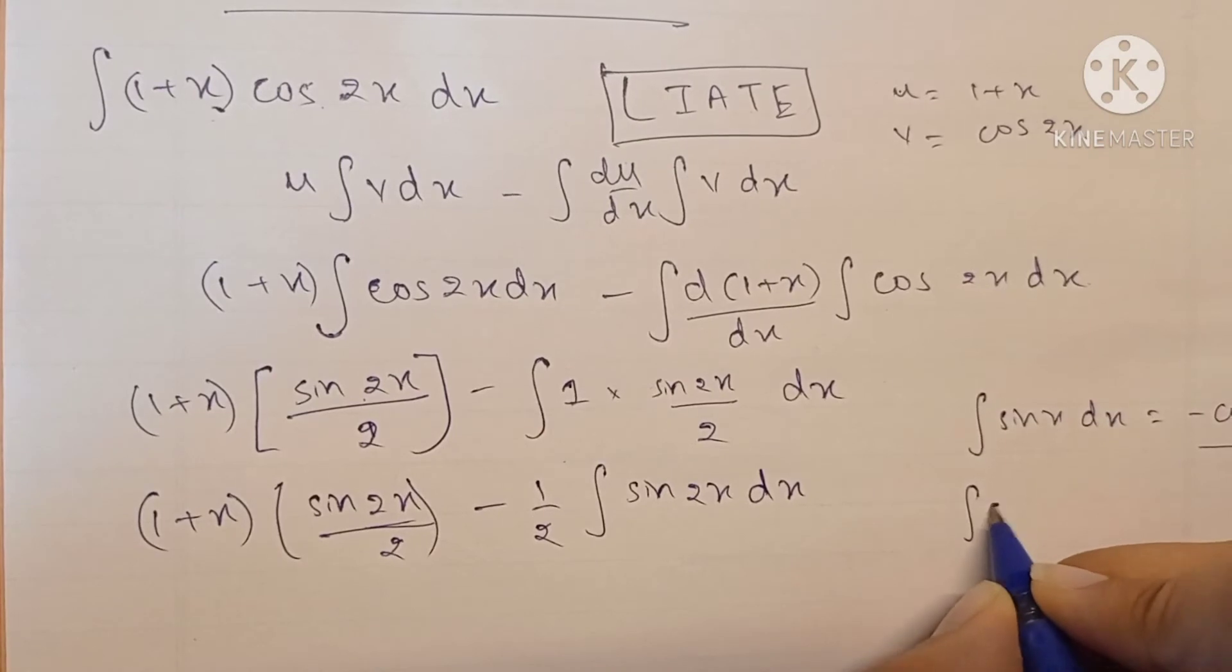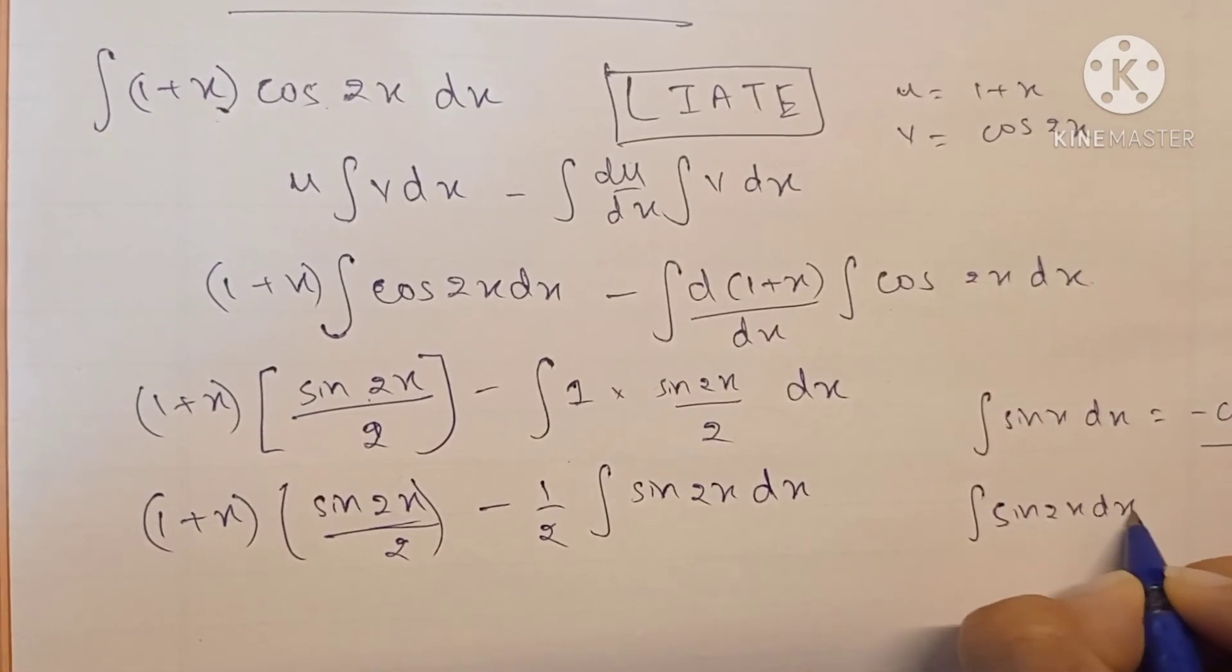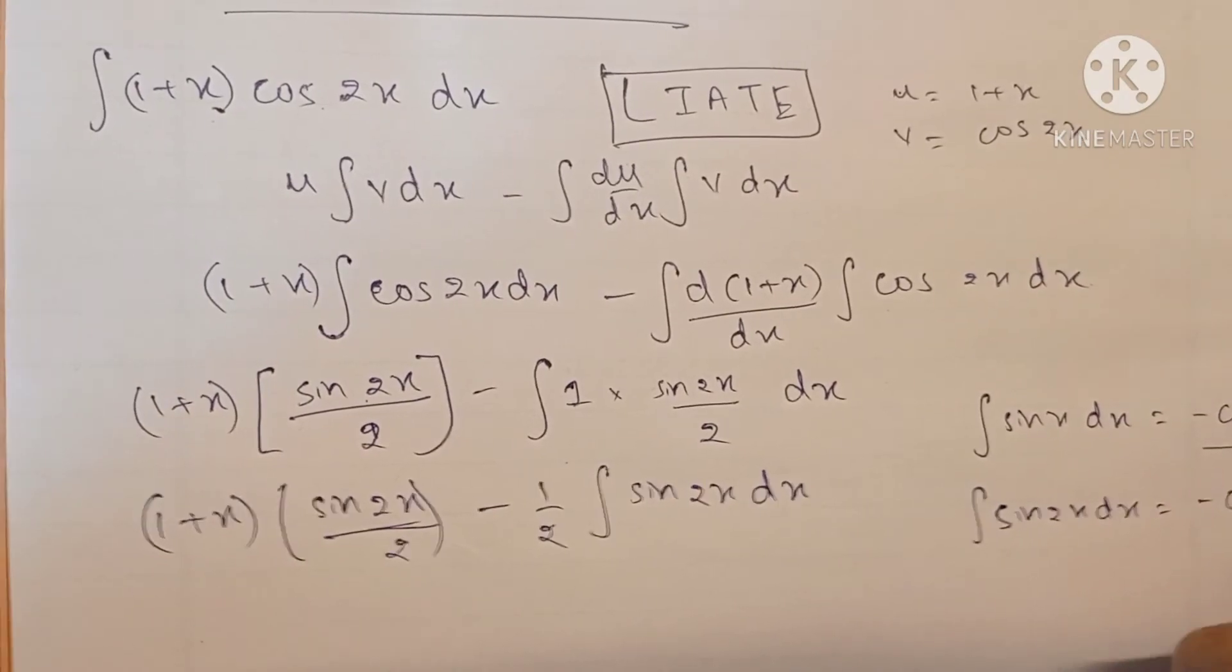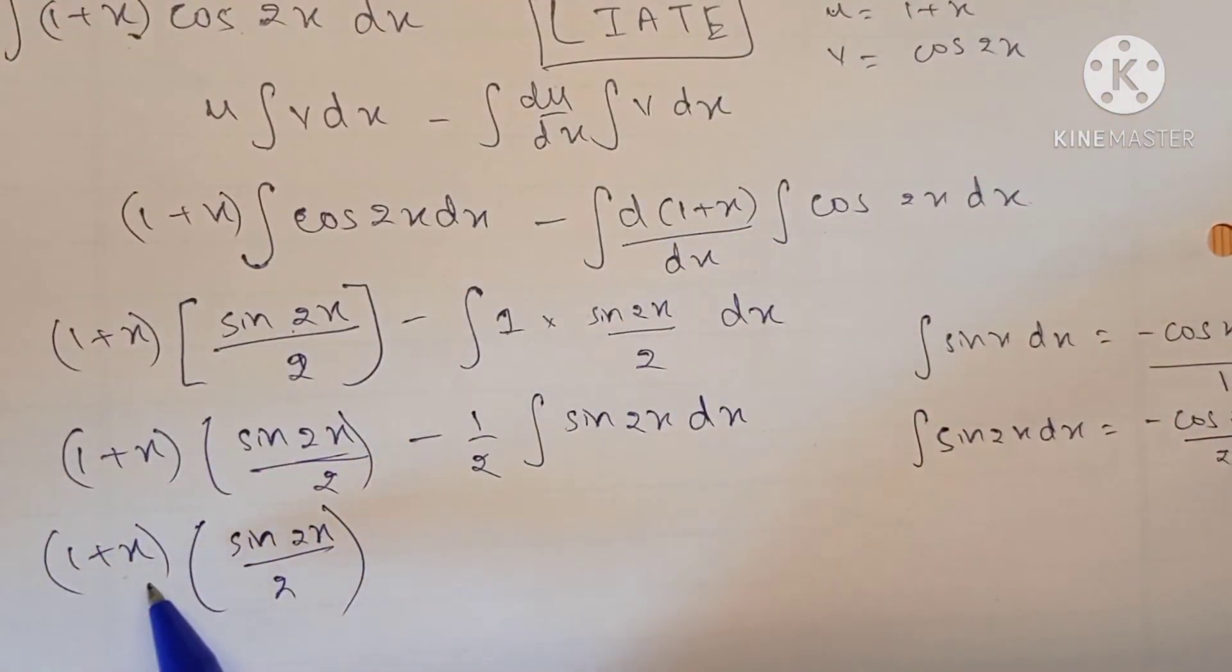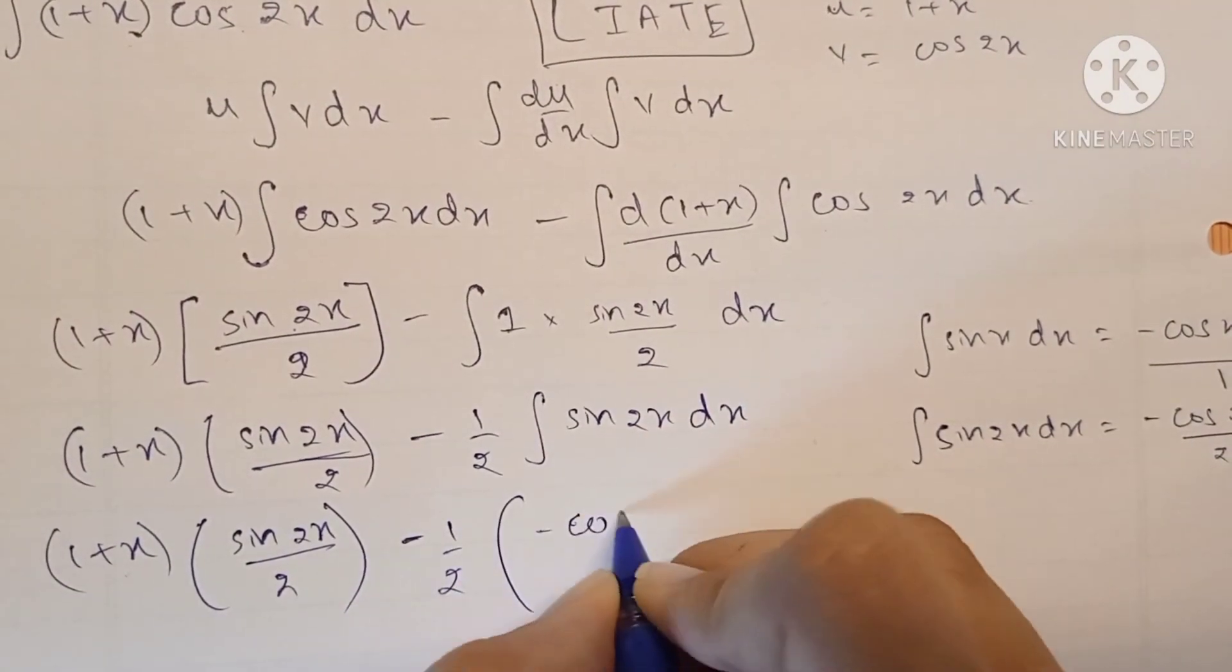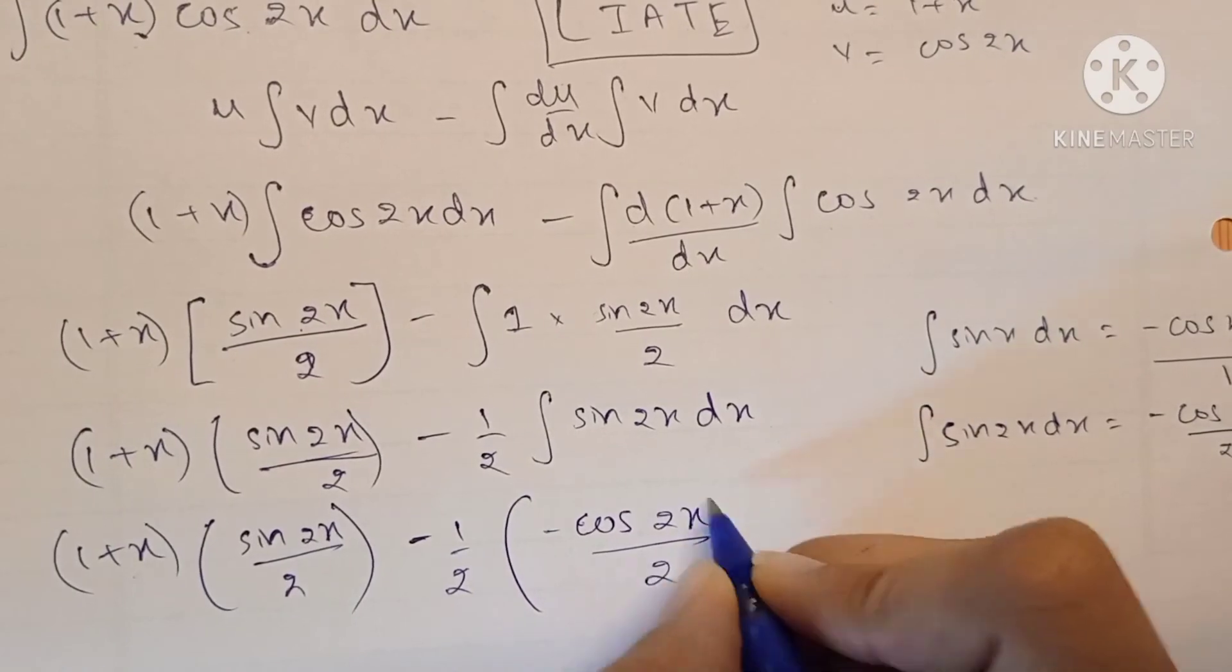So the integration of sin(2x) is minus cos(2x) upon 2. We have (1+x) times sin(2x) upon 2 minus 1/2 times minus cos(2x) upon 2. This is the same thing that we did in the previous question. Don't forget plus C.